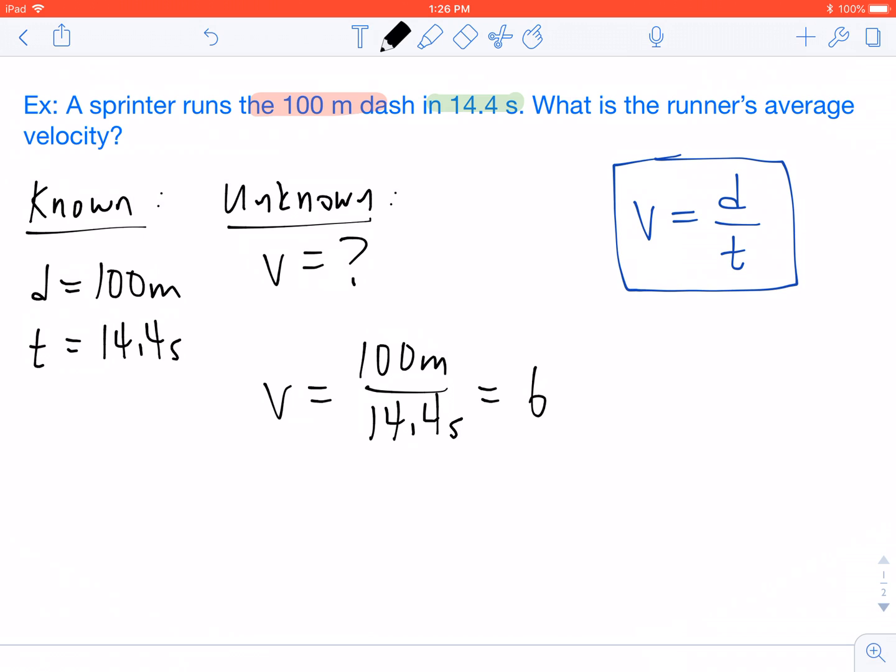Our equation is pretty simple. Velocity is distance over time. So our velocity is going to come out to being 100 meters divided by 14.4 seconds.